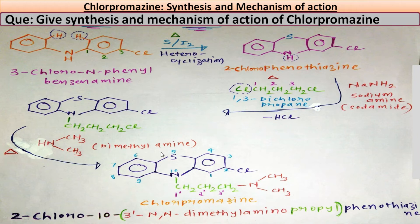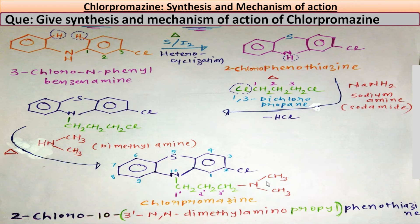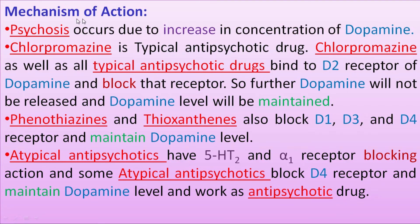On the propyl group, we give numbers differently as one-prime, two-prime, three-prime. The dimethylamino group is present on the three-prime position, so we write 3′-N,N-dimethylamino, then propyl, then the nucleus name phenothiazine. So the IUPAC name is: 2-chloro-10-(3′-N,N-dimethylaminopropyl)phenothiazine. This is the IUPAC name of chlorpromazine.